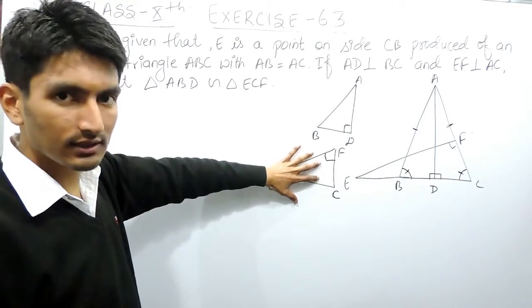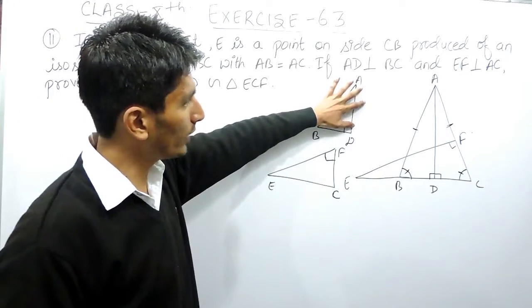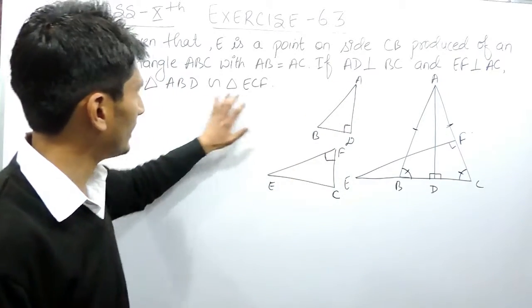And if you are able to do that, I have already explained that these two will become similar. And in triangle ABC, AB is given equals to AC.